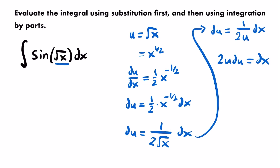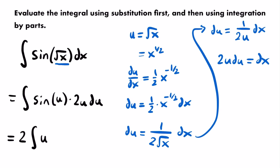Making those substitutions, we have the integral of sin(u) times 2u du. We replaced the square root of x with u and dx with 2u du. Now we're done using u-substitution. Before moving on to integration by parts, let's pull the constant factor of 2 out front and reorder the multiplication. This gives us 2 times the integral of u times sin(u) du.